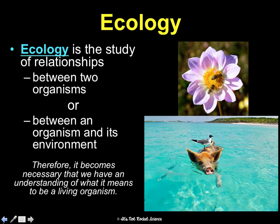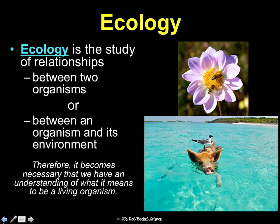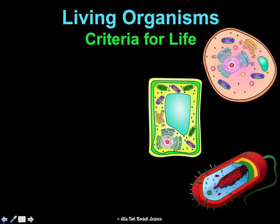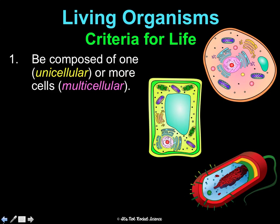Something we need to discuss before we move on is what it means to be an organism, because an organism is an individual living thing, so we need to know what it means to be alive. There are basically six criteria for being alive.